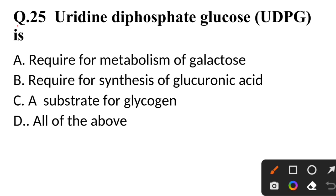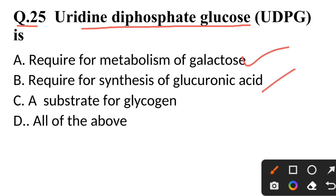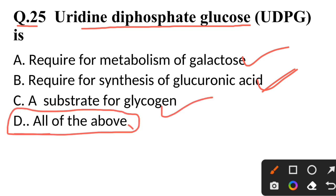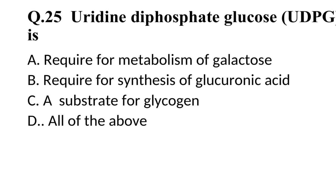Question 25: Uridine diphosphate glucose (UDP-glucose) is — required for metabolism of galactose, required for synthesis of glucuronic acid, a substrate for glycogen — correct answer is all of the above.